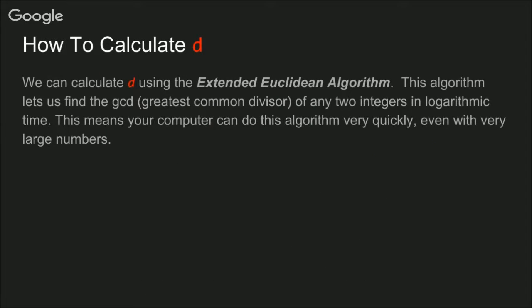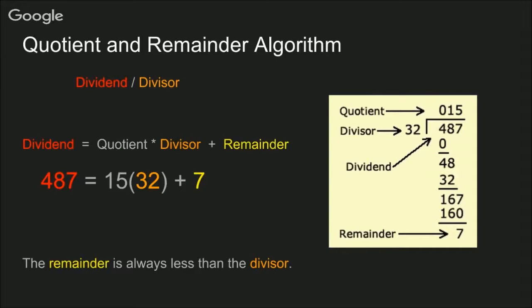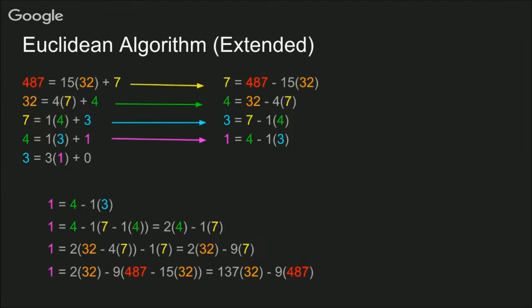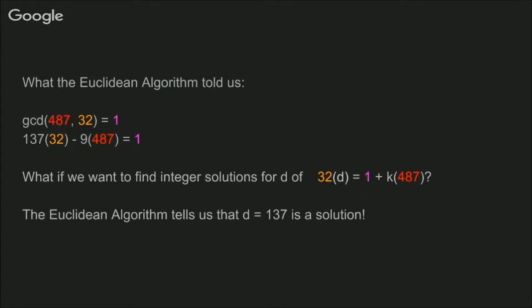Finally, I said before that we can calculate D using the extended Euclidean algorithm. This algorithm lets us find the GCD of any two integers in logarithmic time, which is very fast to a computer. So the Euclidean algorithm uses repeated applications of the quotient and remainder theorem, which is shown here, to form a cascading chain of remainders until the end result is the GCD. We can then reverse these equations like so, and use them to solve equations of the form E times D is equal to 1 plus K times φ, like in step 3 of RSA.